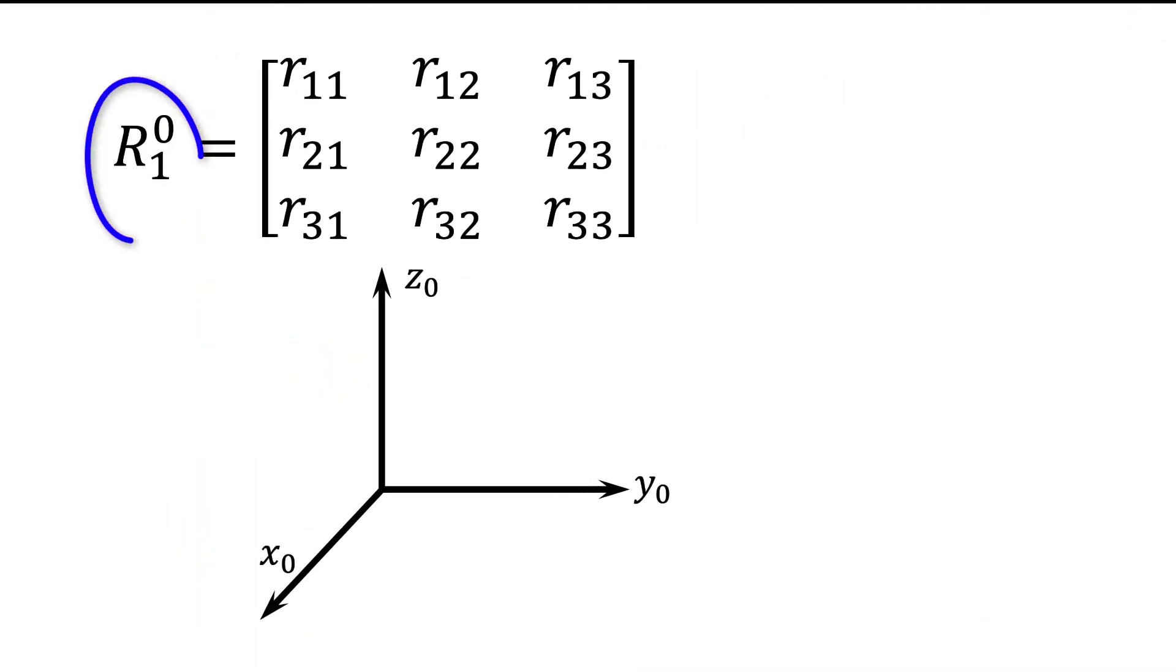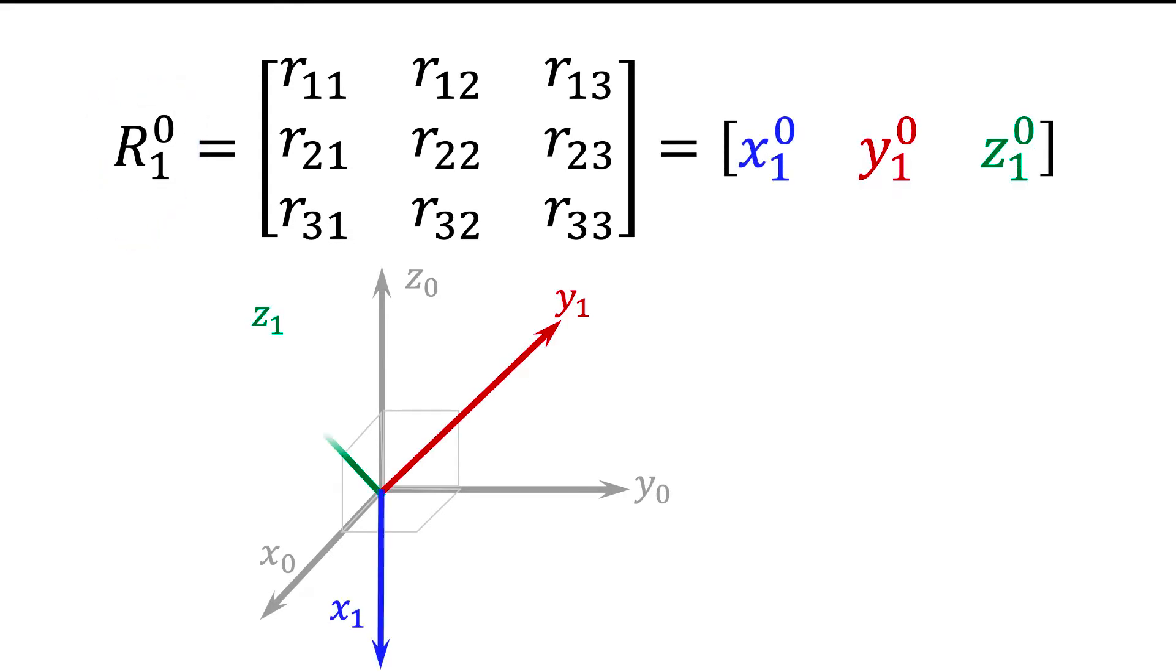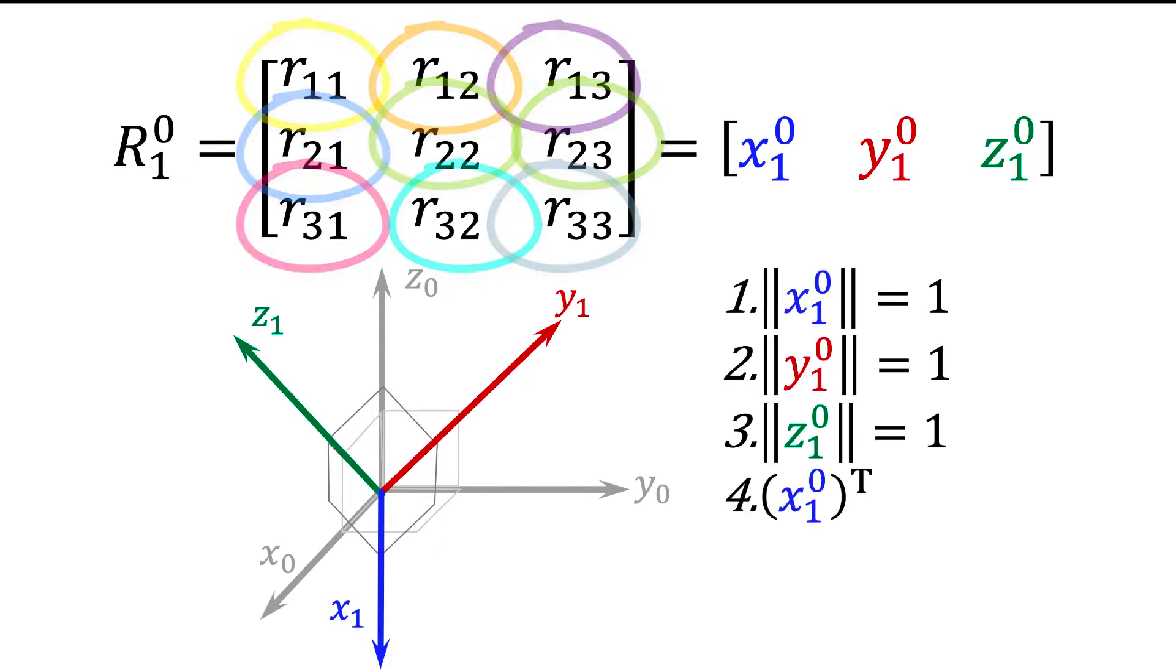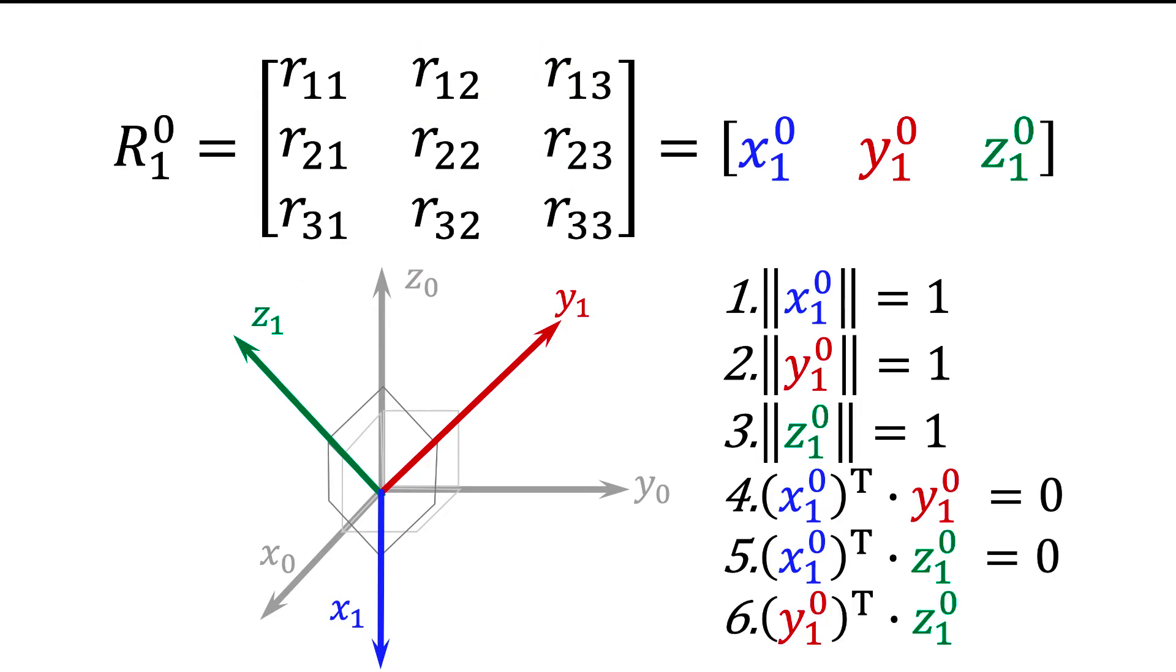A rotation matrix tells you the coordinates of three orthogonal coordinate vectors: X, Y, and Z. The matrix has nine entries, but six constraints, so there are only three parameters.